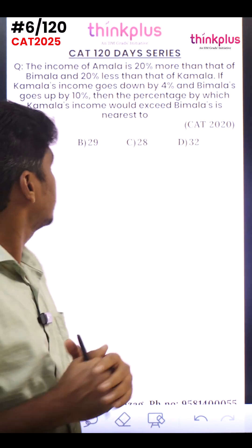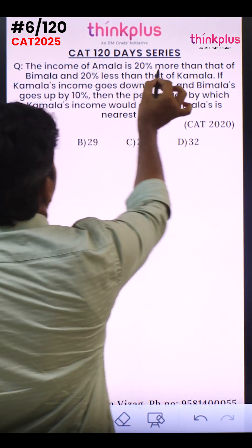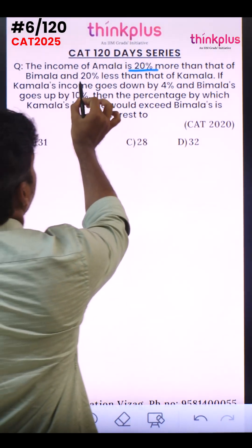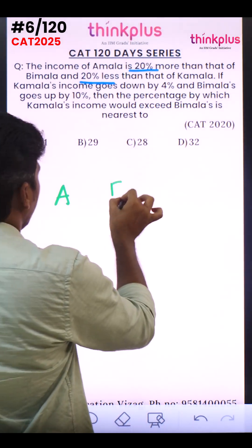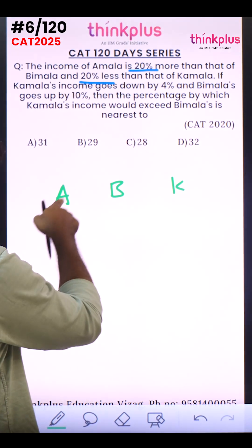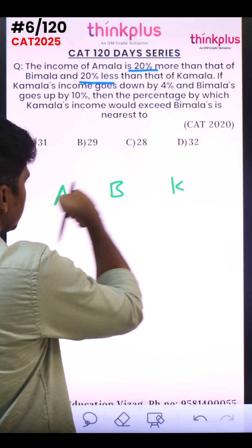Let's look at this CAT 2020 question. The income of Amala is 20% more than that of Beamla and 20% less than that of Kamala. Here Amala is compared with Beamla and Kamala. So Amala is 20% more than Beamla and 20% less than Kamala.